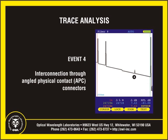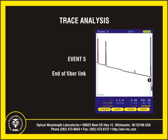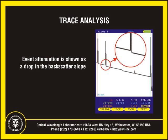Event number four is a reflective event at an interconnection using high return loss angled physical contact connectors. Event number five is another reflective event, which is probably the end of the fiber link, but could also indicate a severe enough break where no other events can be detected beyond it. When analyzing traces, the slope of the line will appear to dip to a lower level after the event, and the amount of drop indicates a certain amount of loss or attenuation.